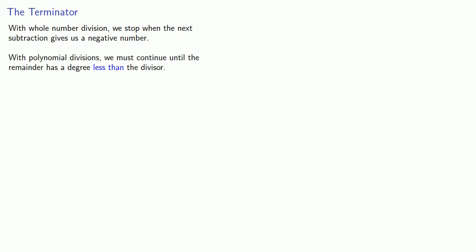Now, there is one important change we have to make when we're dealing with polynomials. With whole number division, we stop when the next subtraction will give us a negative number. With polynomial divisions, we must continue until the remainder has a degree less than the divisor.